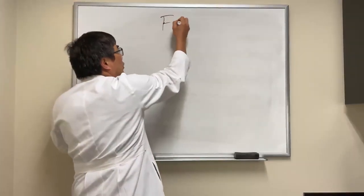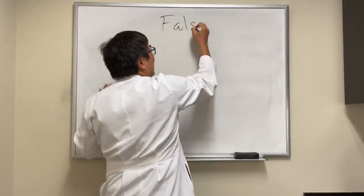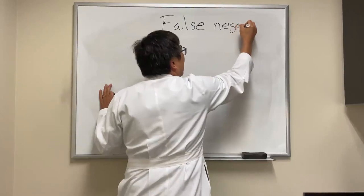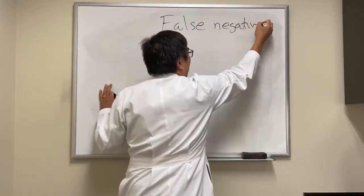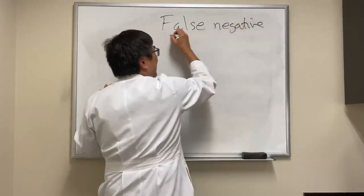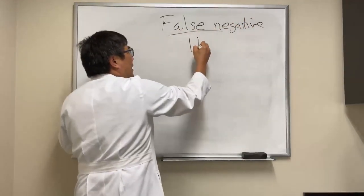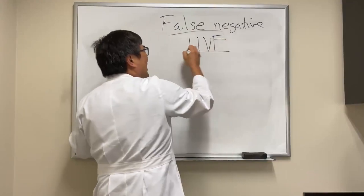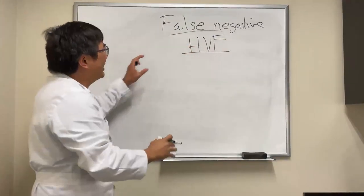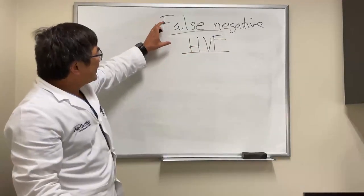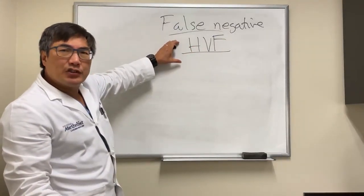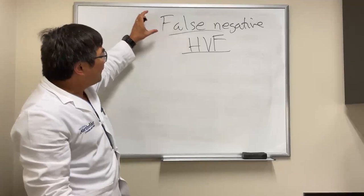Someone wants to know what the meaning of a false negative is on automated perimetry — in this example, the Humphrey visual field. But it applies to really any test, including any test of the visual field.